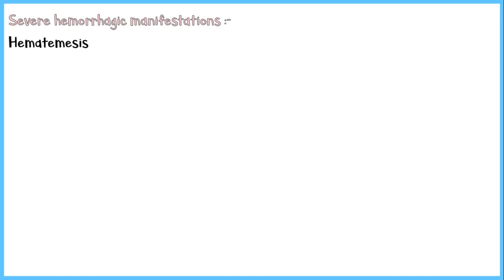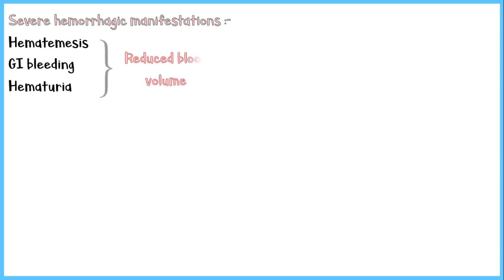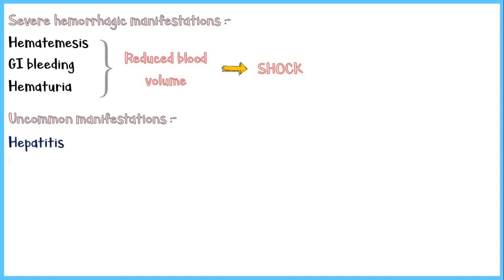These patients will also show severe hemorrhagic manifestations, including hematemesis or vomiting of blood, GI bleeding, and hematuria, which further reduce blood volume and ultimately result in shock. Some uncommon manifestations of severe dengue during this phase include hepatitis, myocarditis, pancreatitis, and encephalitis.